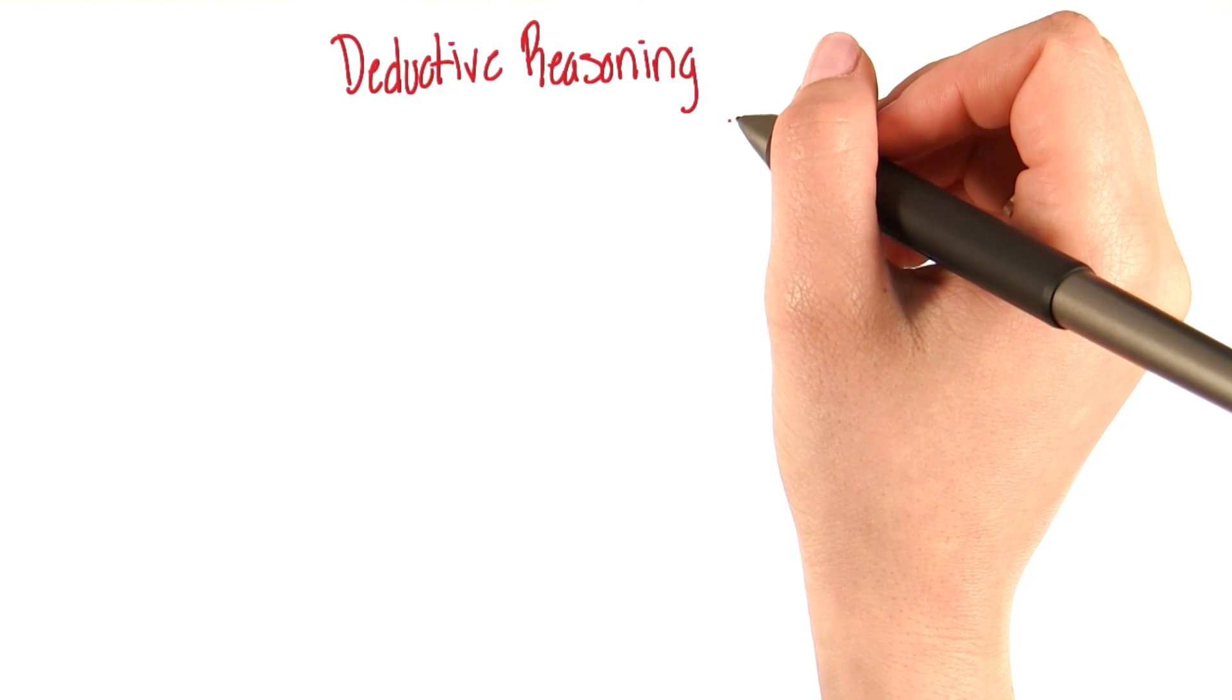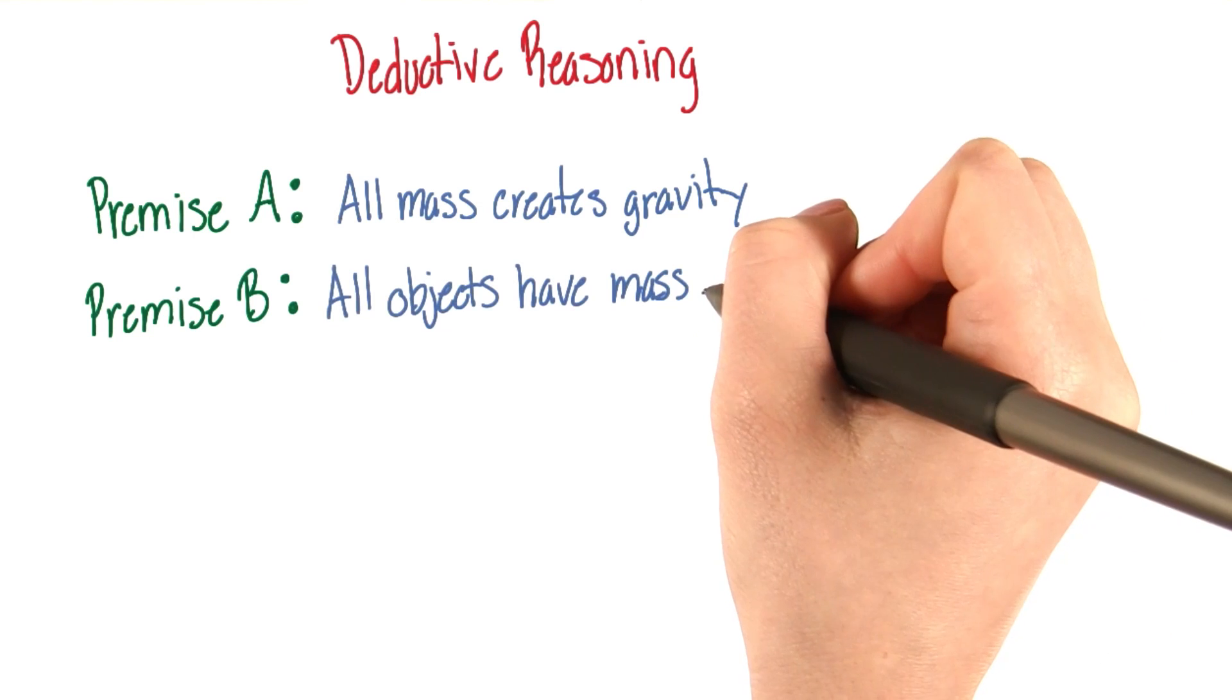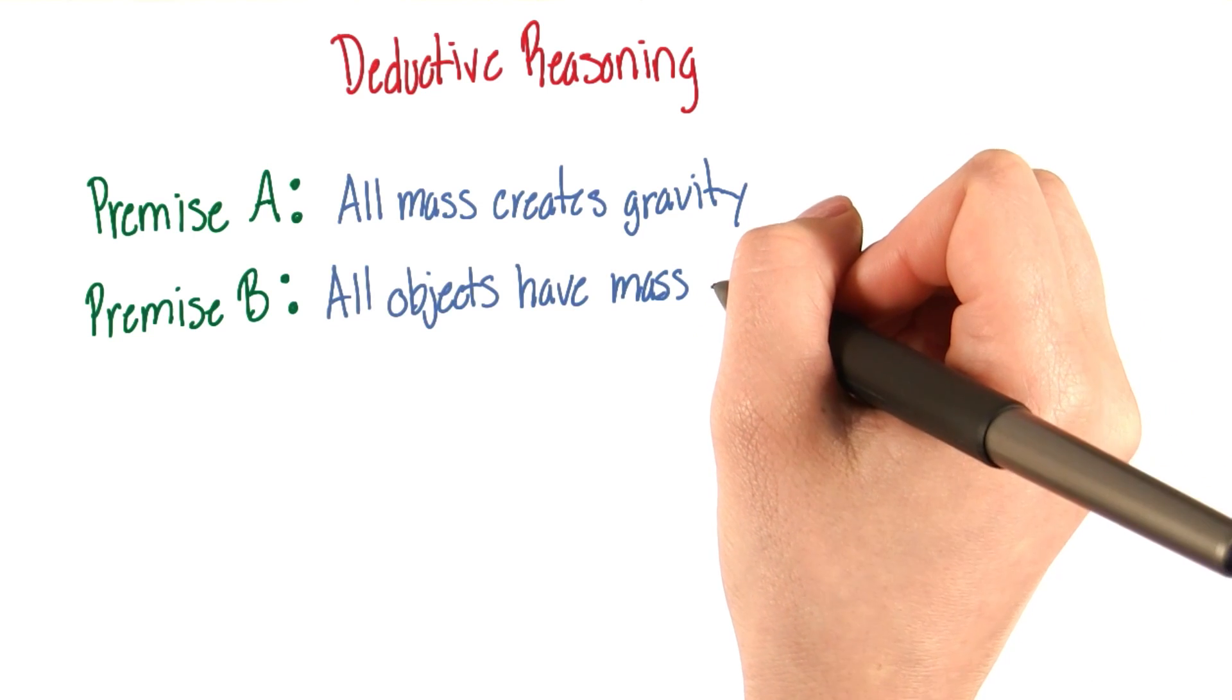Let's look at an example of deductive reasoning. Premise A is all mass creates gravity. And premise B is all objects have mass.